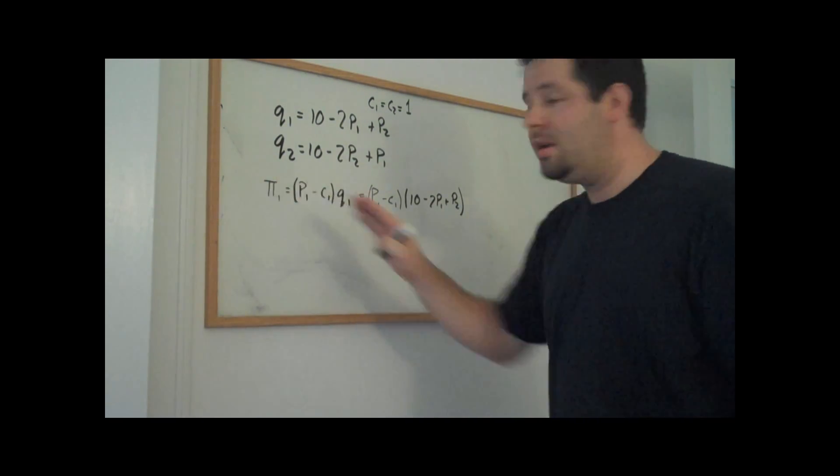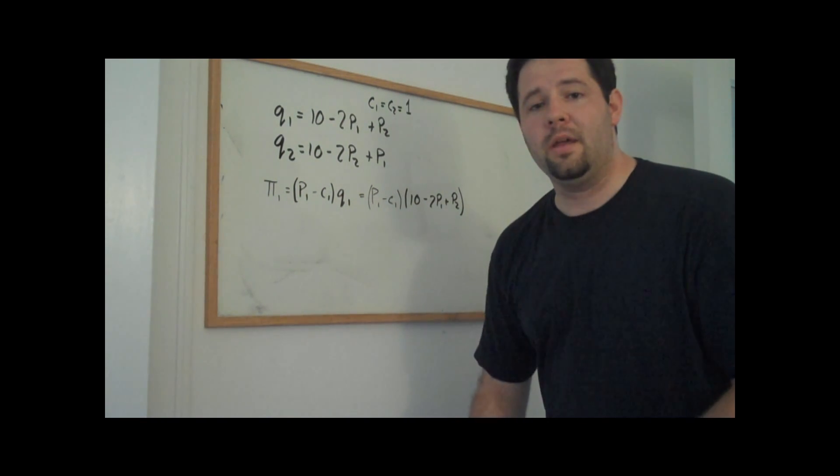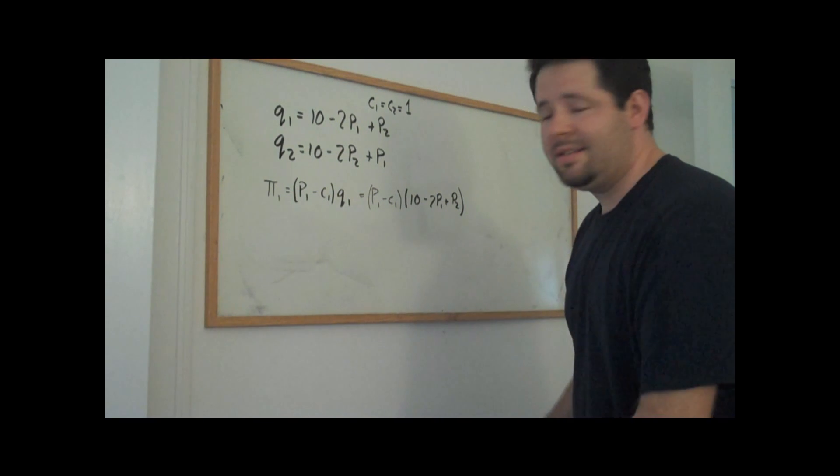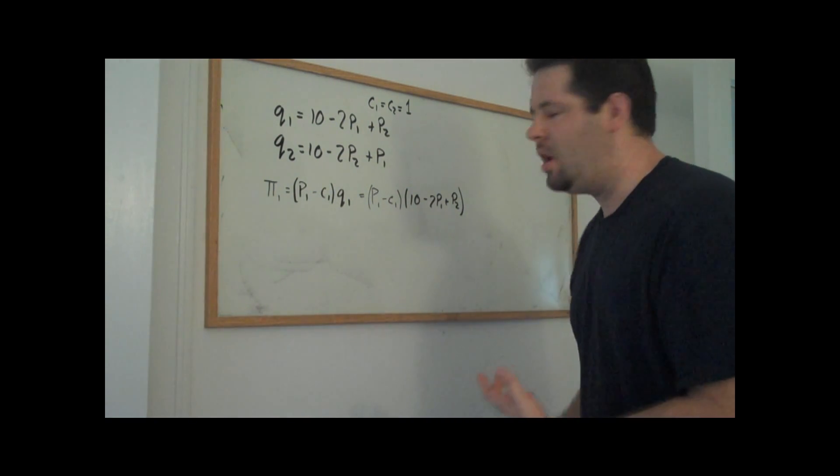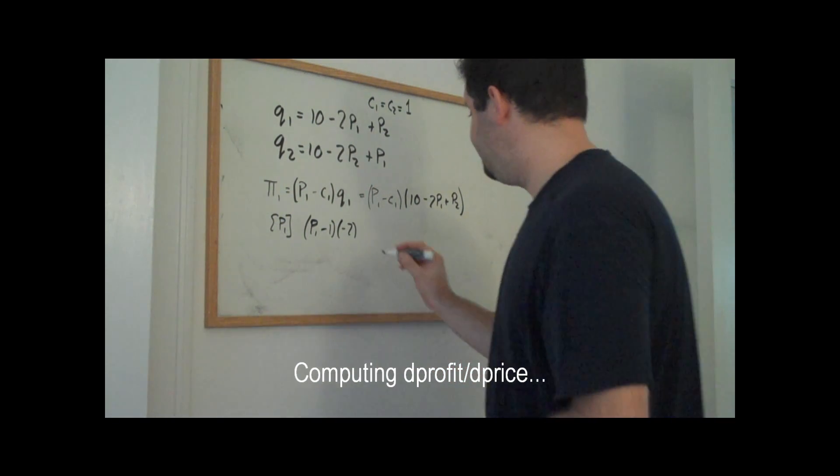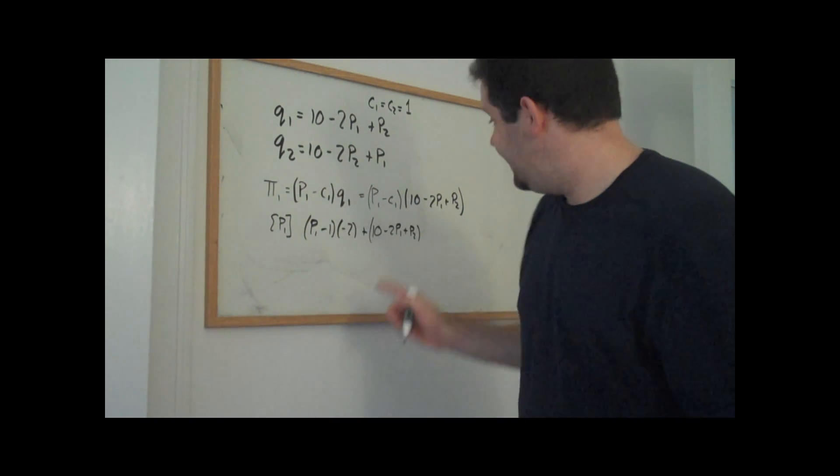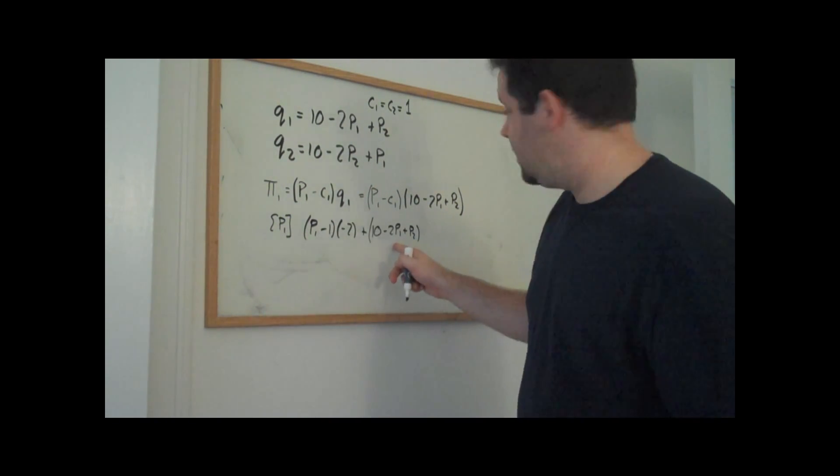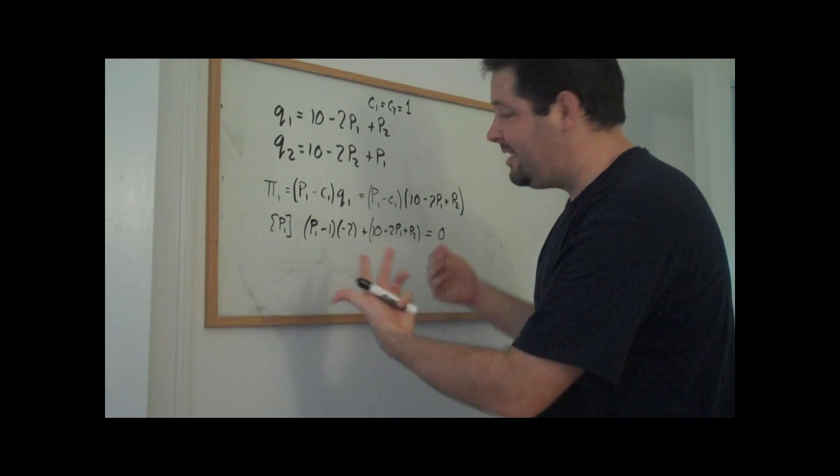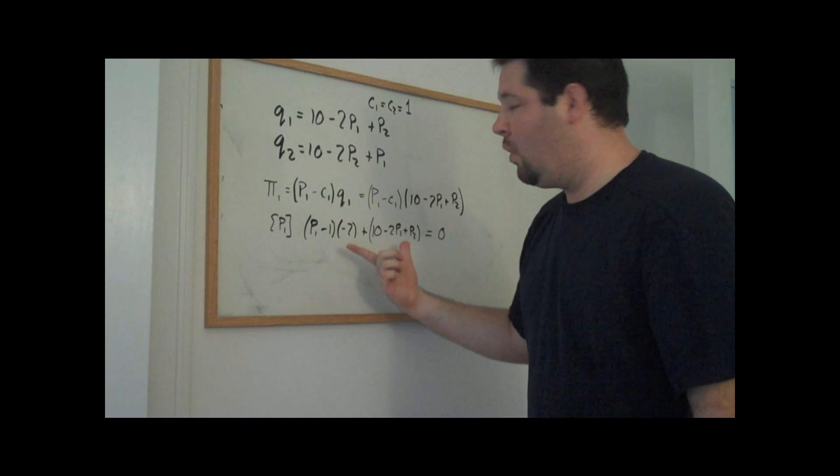Now this is firm one, so firm one can only pick a price, the price P1, the price that he sets. And so let's take the first order condition for firm one. That's first times the derivative of the second, plus the second times the derivative of the first. We set that equal to zero and this is going to be essentially the reaction function for firm one given firm two's price.